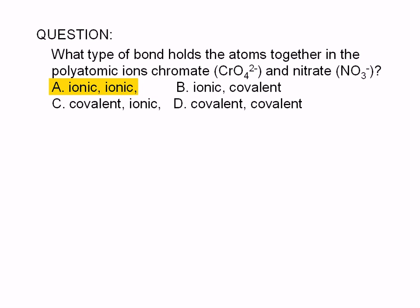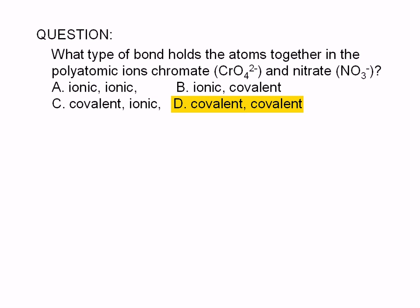A. Ionic for both chromate and nitrate. B. Ionic for chromate, covalent for nitrate. C. Covalent for chromate, and ionic for nitrate. D. Covalent for both chromate and nitrate.